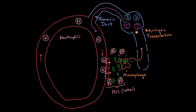Once the T cells are in the blood, they do essentially the same thing as the neutrophils. They'll come to the site of infection, realize where they need to go because of chemical signals, and then squeeze through between the endothelial cells and get out into the tissue.